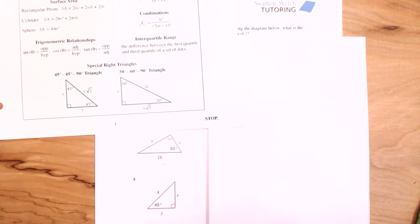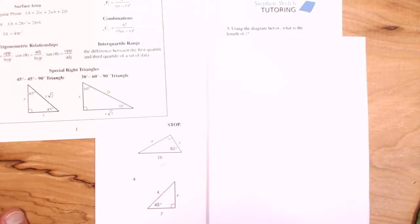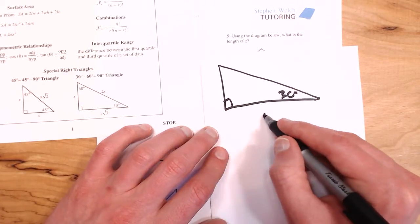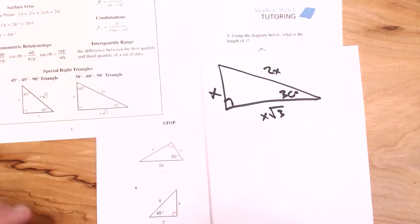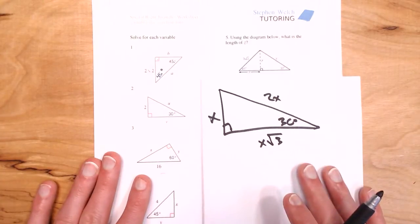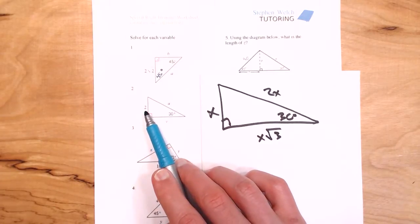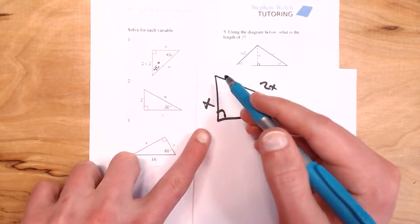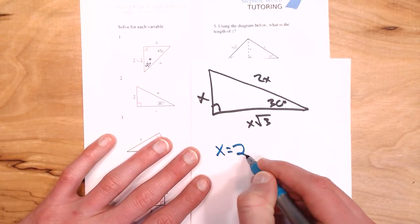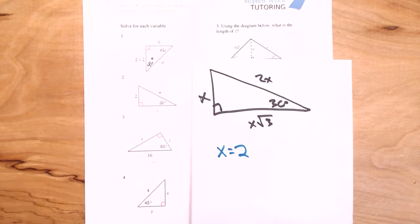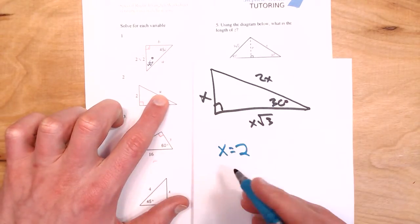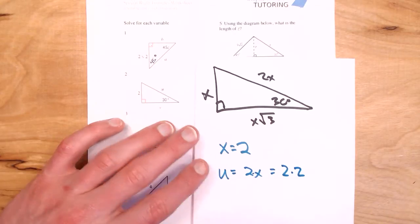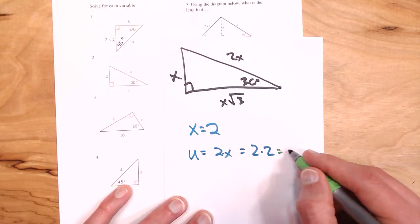I'll copy down the reference right triangle for the 30-60-90: 30 degrees down here, right angle over here, sides X root three, X, and 2X. Comparing side by side, this side corresponds to this side — the one side I know. Because these two sides are the same, X is equal to two. Now that X is two, U equals 2X, which is two times two, so U is four.